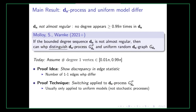Our main result shows that the DN process and the uniform model differ when DN is not almost regular. By not almost regular, I mean that no single degree value appears more than 99% of the time in the degree sequence — and 99% here is just an arbitrary number you can replace with anything less than 1. Our result states that if the bounded degree sequence DN is not almost regular, then with high probability we can distinguish the DN process graph from the uniform random DN graph.